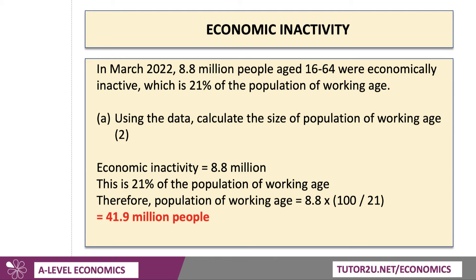Calculation first. The economic inactivity level is 8.8 million, and we're told that's 21% of the population of working age. Therefore, we rework the formula: the population of working age will be 8.8 million times 100 over 21. That gives a figure of 41.9 million people — so 21% of 41.9 million is 8.8.